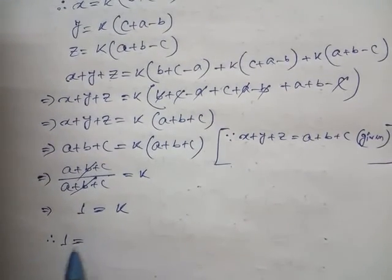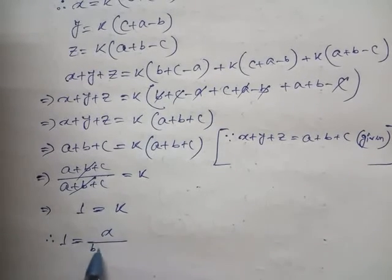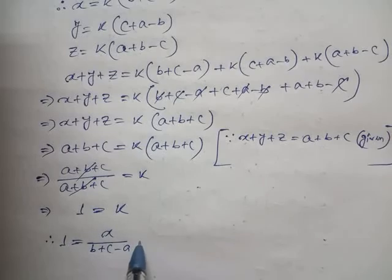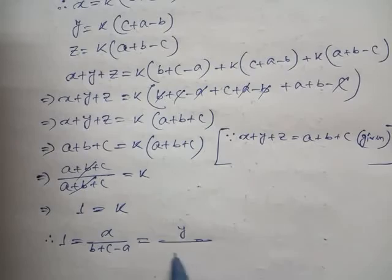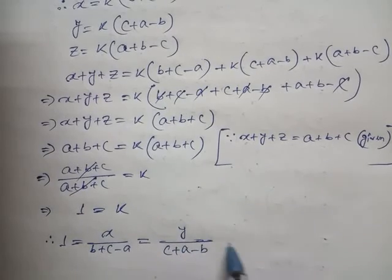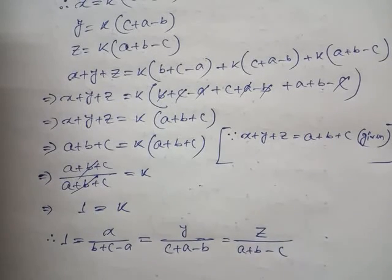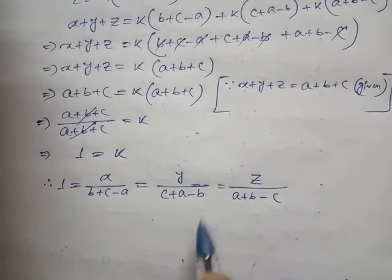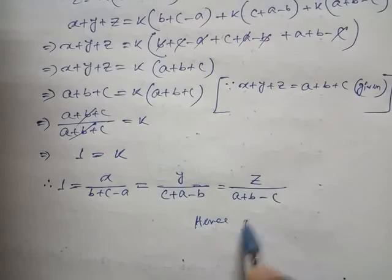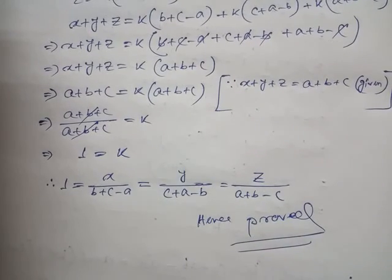Therefore, since k equals 1, substituting back: x by (b plus c minus a) equal to y by (c plus a minus b) equal to z by (a plus b minus c) equal to 1. This is our proof. Hence proved. This is the answer of Question number 10.